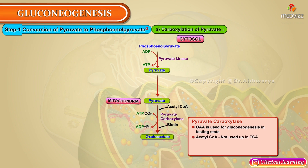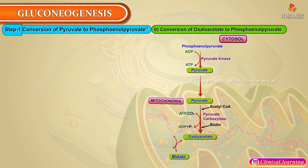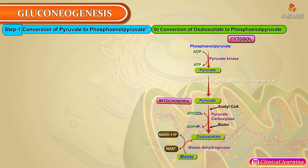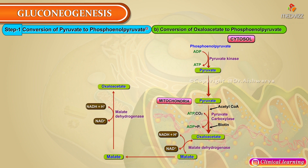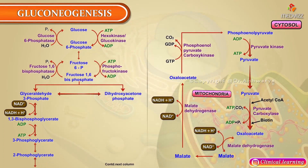Pyruvate carboxylase is activated by acetyl-CoA. When OAA is used for gluconeogenesis in the fasting state, acetyl-CoA is not consumed in the citric acid cycle and accumulates. Acetyl-CoA is therefore a very important allosteric activator of pyruvate carboxylase. Oxaloacetate produced in the mitochondria cannot cross the membrane, so it is first reduced to malate, which moves across the mitochondrial membrane into the cytosol, where it is re-oxidized back to oxaloacetate.